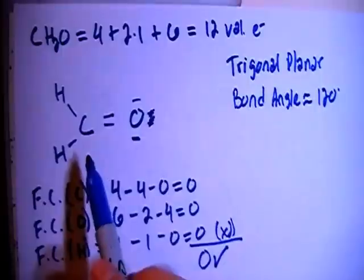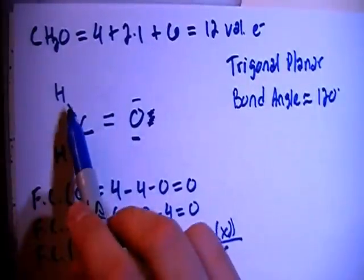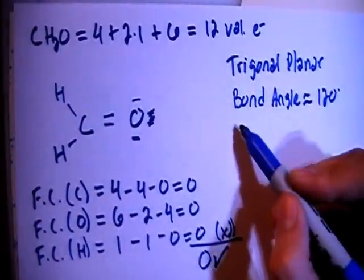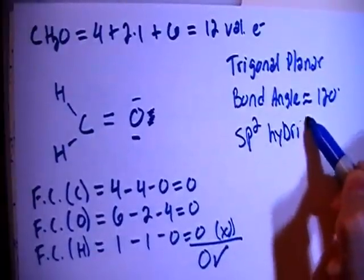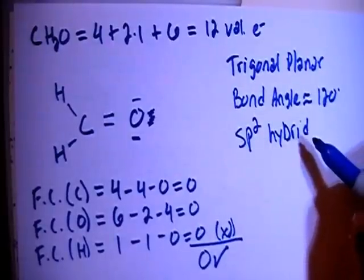In terms of the carbon as a central atom, there's 1, 2, 3 electron groups, or bonding sites, which means you're going to have sp2 hybridization. So sp2 hybrid.